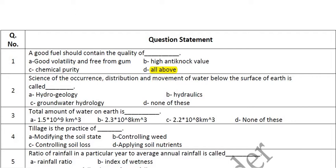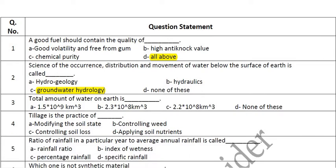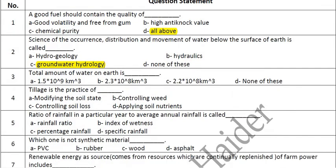The science of the occurrence, distribution, and movement of water below the surface of the earth is called groundwater hydrology. The total amount of water on earth is 1.5 × 10⁹ cubic kilometers.